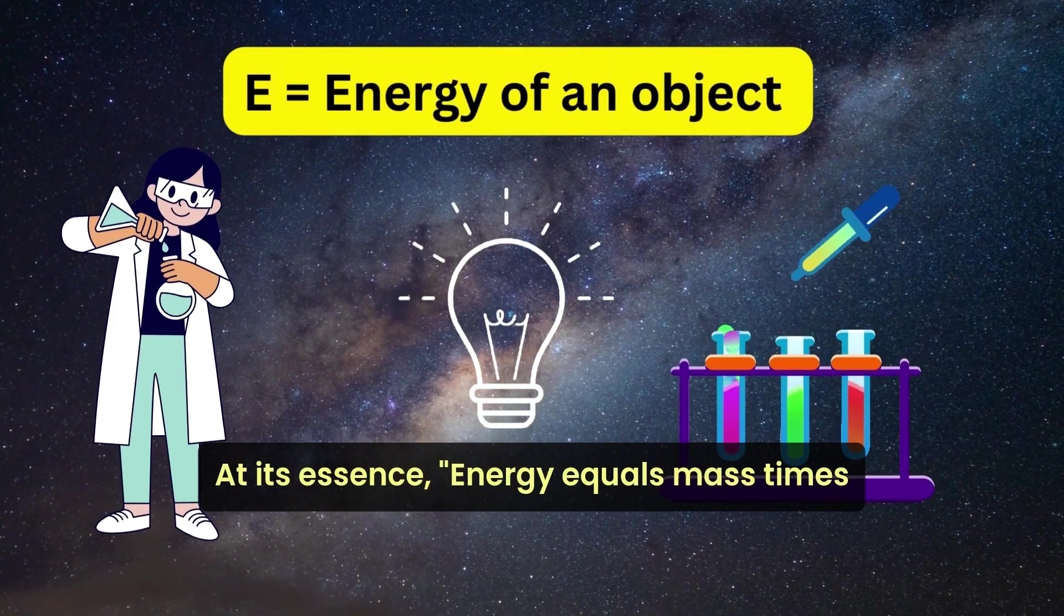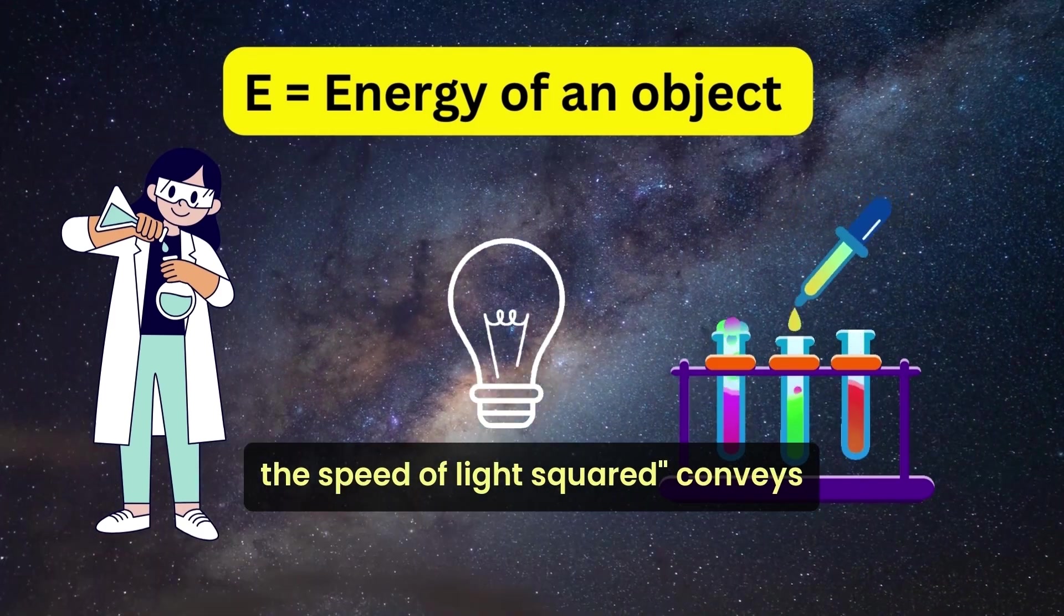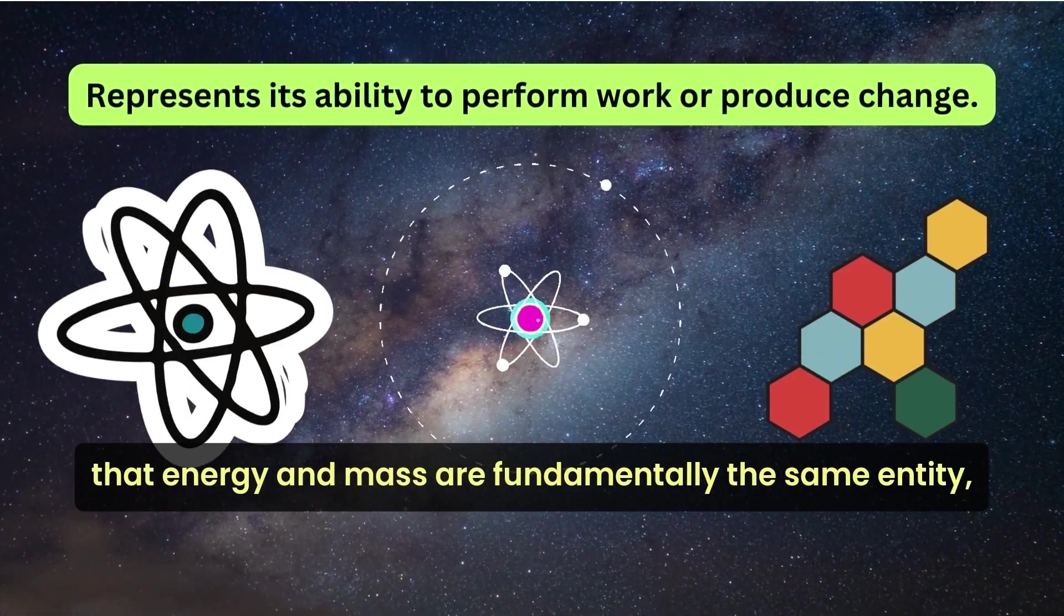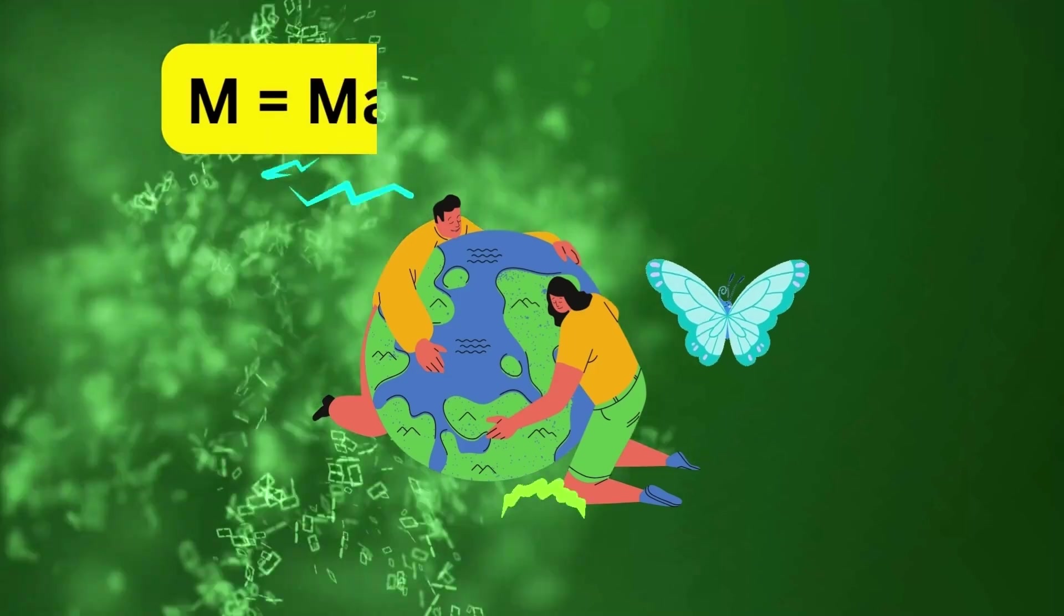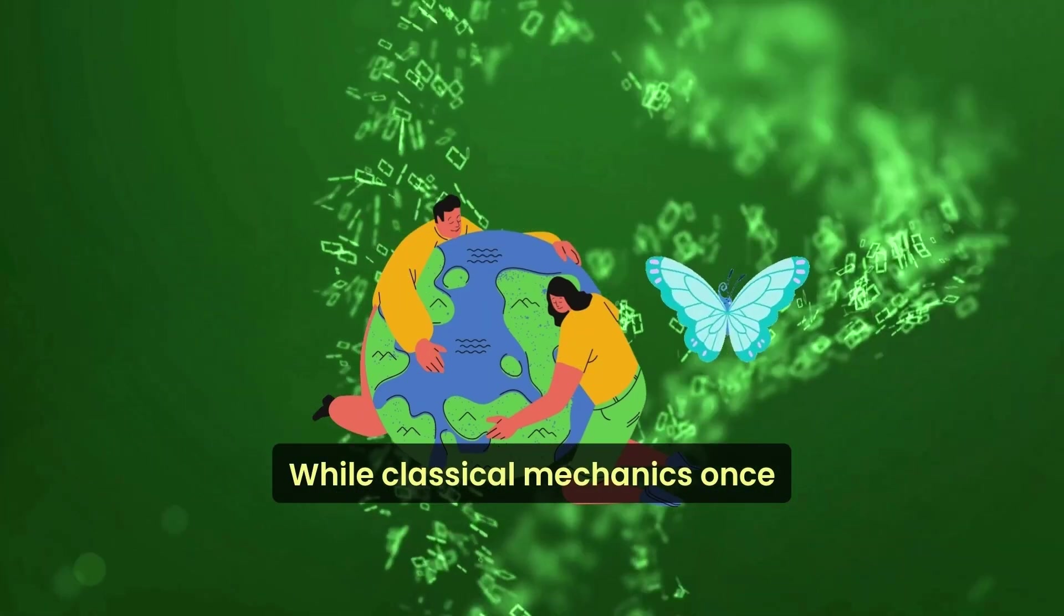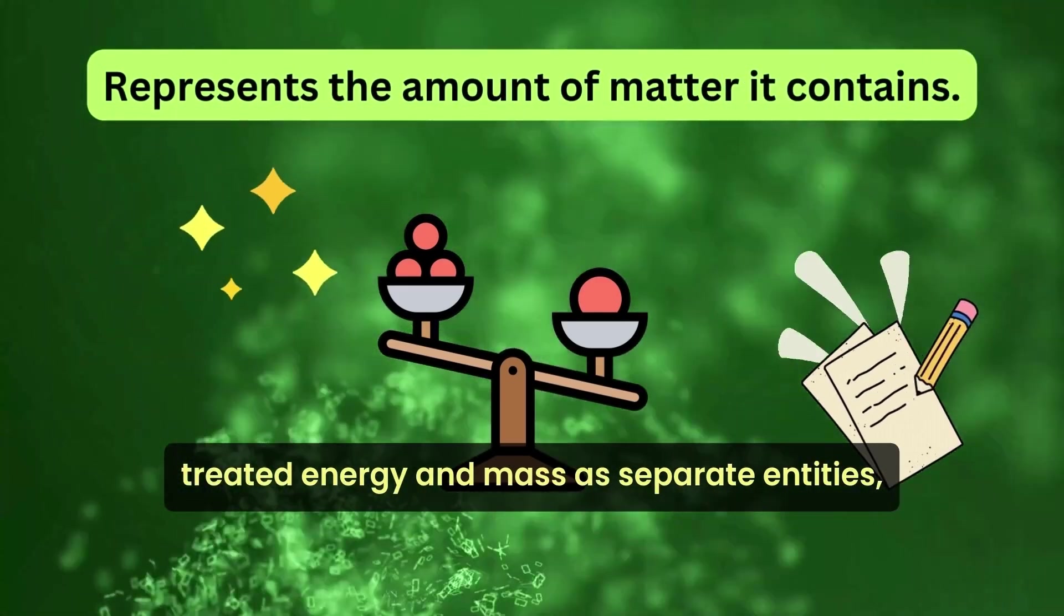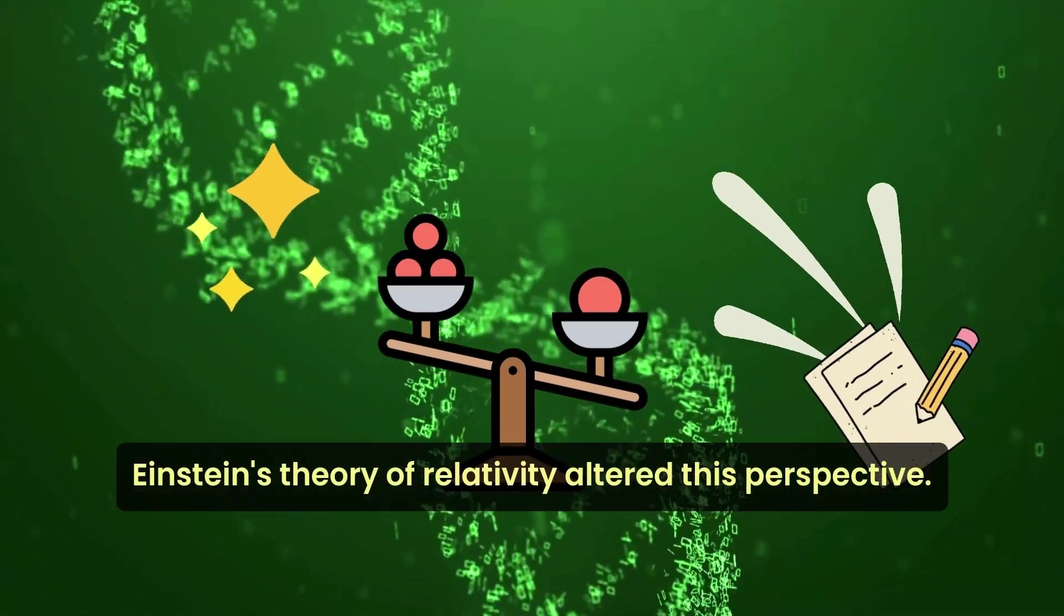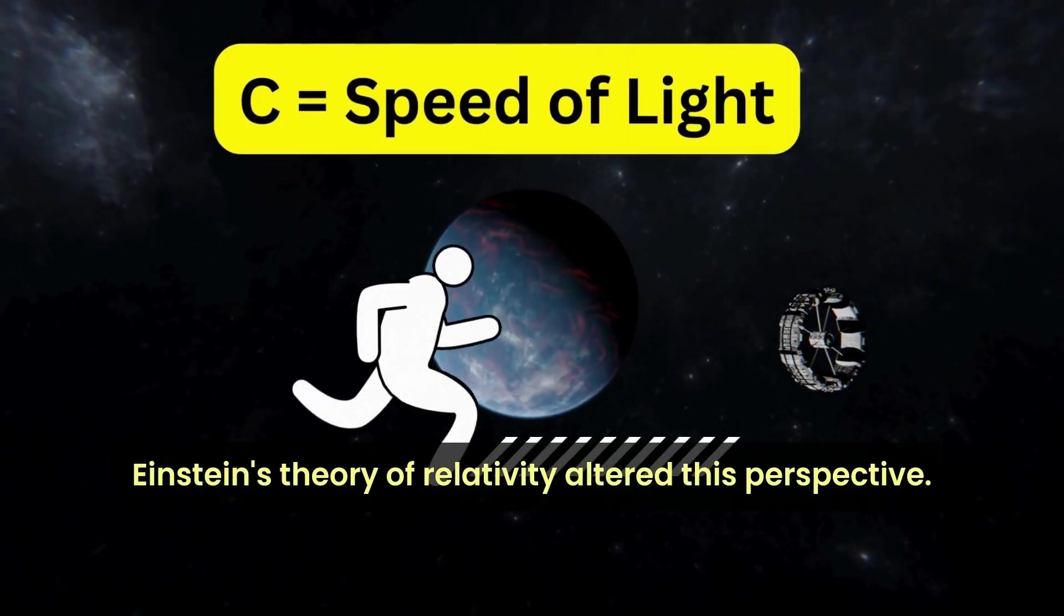At its essence, energy equals mass times the speed of light squared conveys that energy and mass are fundamentally the same entity, just expressed in different forms. While classical mechanics once treated energy and mass as separate entities, Einstein's theory of relativity altered this perspective.